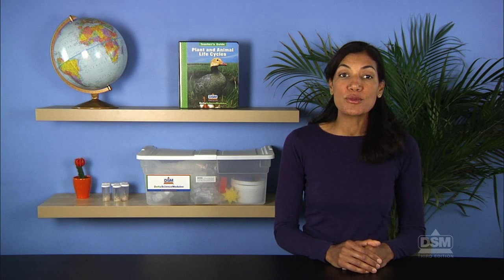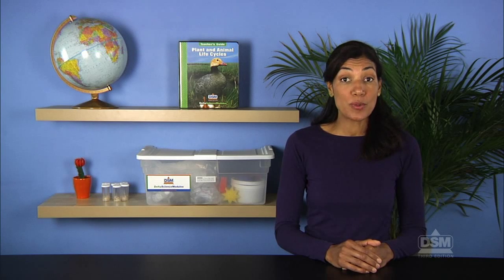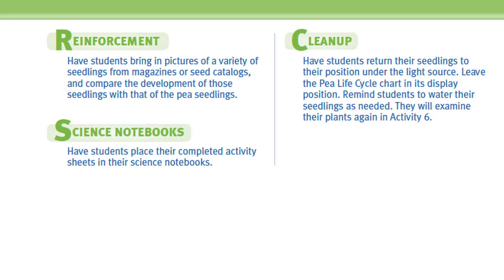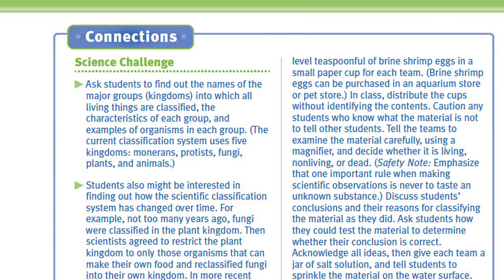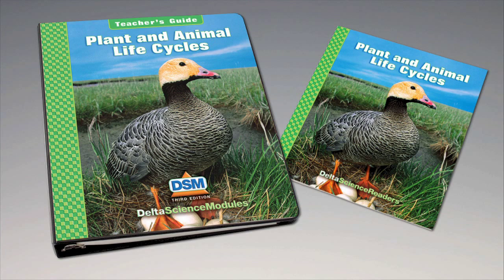Finally, inform students that they will investigate further signs of growth in the pea plants in Activity 9, Plant Life Cycle. To conclude Session 2, have students return extra potting soil and gravel to the bags and discard the newspaper. Wash the planter cups and bases and return them to the kit for use in Activity 9. For science background, reinforcement activities, curriculum connections, and information about the Delta Science Reader, please consult your DSM Teacher's Guide.